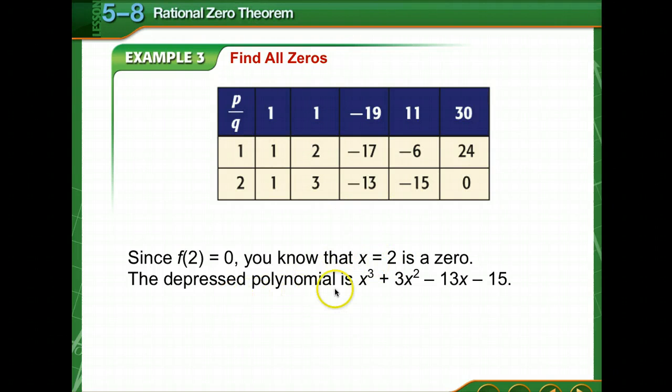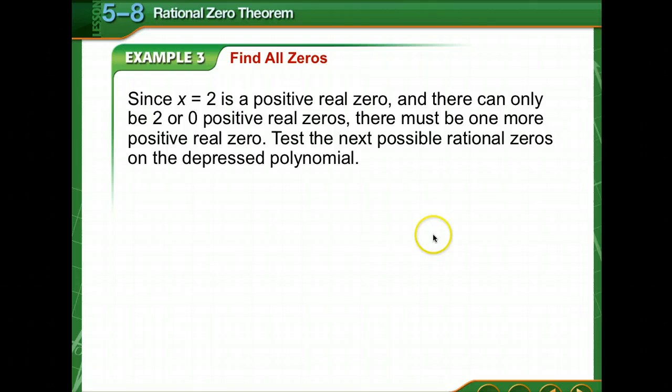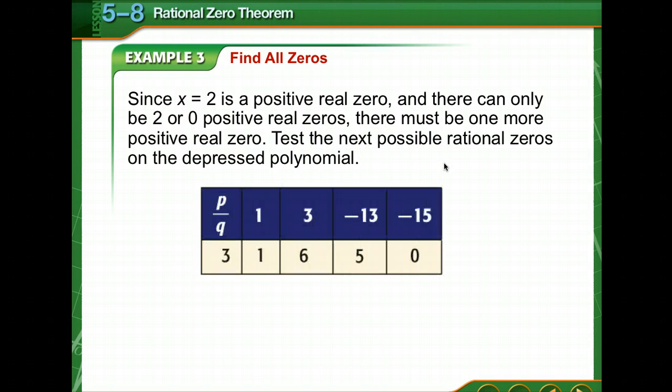We know that x equals 2 is a zero. The depressed polynomial is x to the third plus 3x squared minus 13x minus 15. We take another one of those possible zeros. x equals 2 is a positive real zero. There can only be 2 or 0 positive real zeros, so there must be one more. We're going to test the next possible rational zeros on the depressed polynomial.